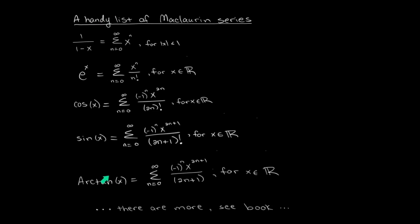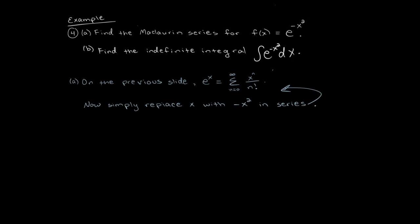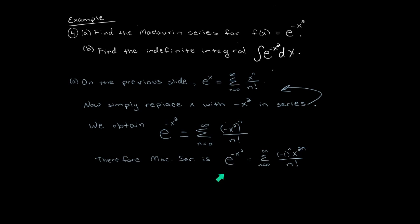We're going to use the list of Maclaurin series as given to derive Maclaurin series for more complicated functions. We'll find the Maclaurin series for e to the negative x squared. We know that the Maclaurin series for e to the x is the summation of x to the n over n factorial. Everywhere we see an x, we replace it with negative x squared, and after simplifying, that gives us the Maclaurin series for e to the negative x squared.